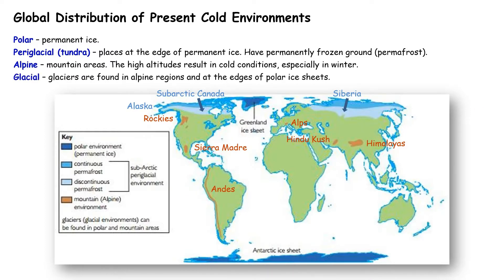The final areas that are cold environments are glaciers themselves. These are the rivers of frozen ice that are found in alpine regions and at the edges of polar ice sheets. This map shows the current distribution of cold environments across the world.